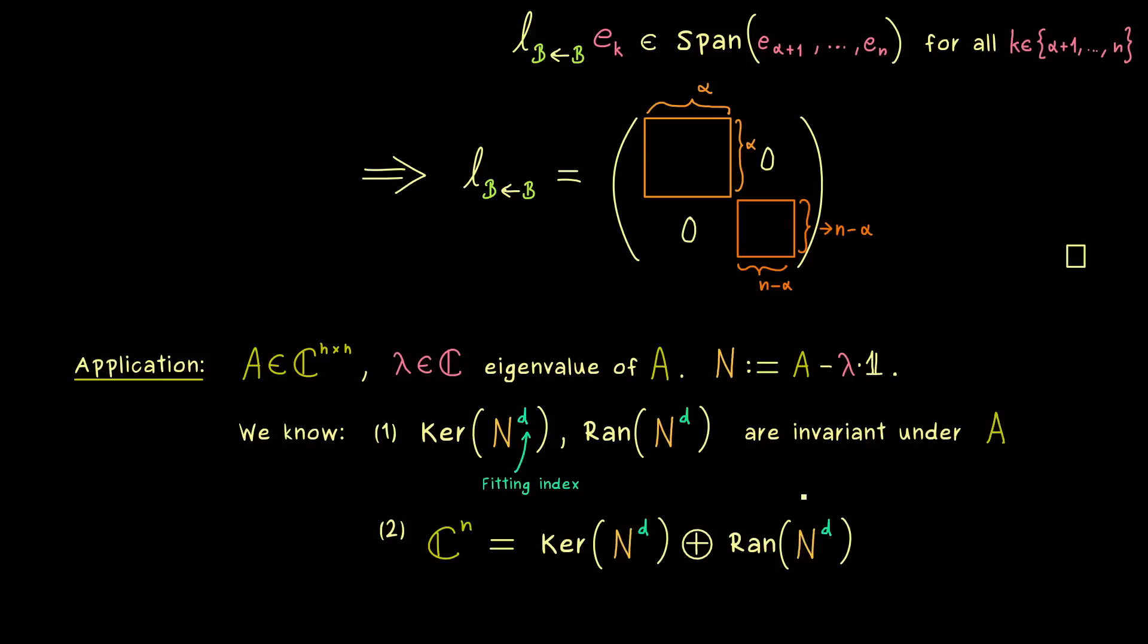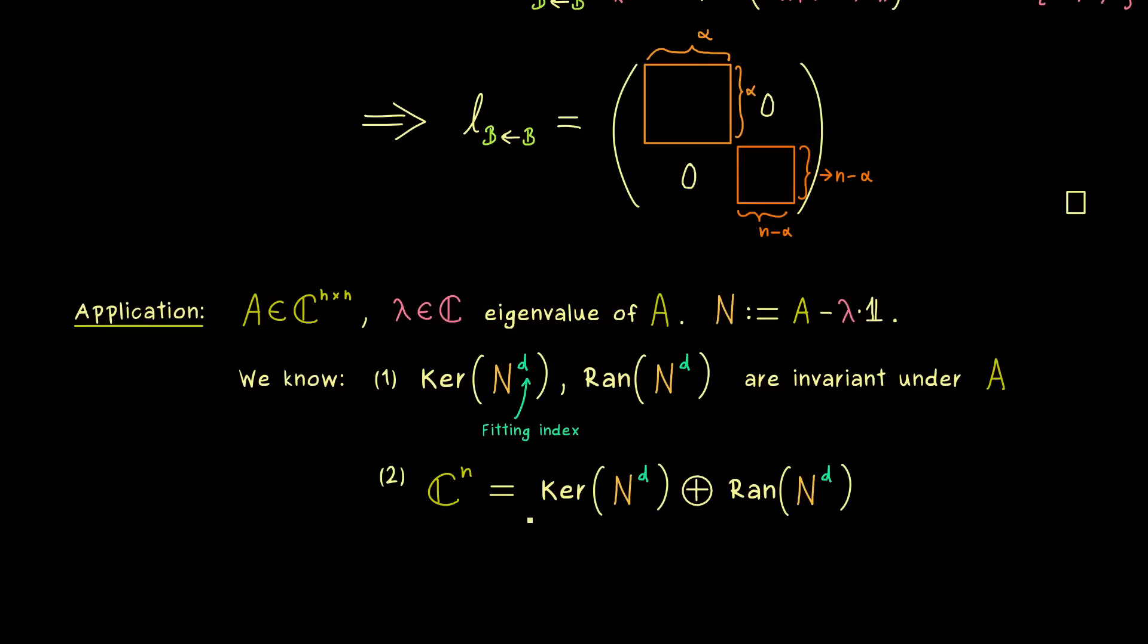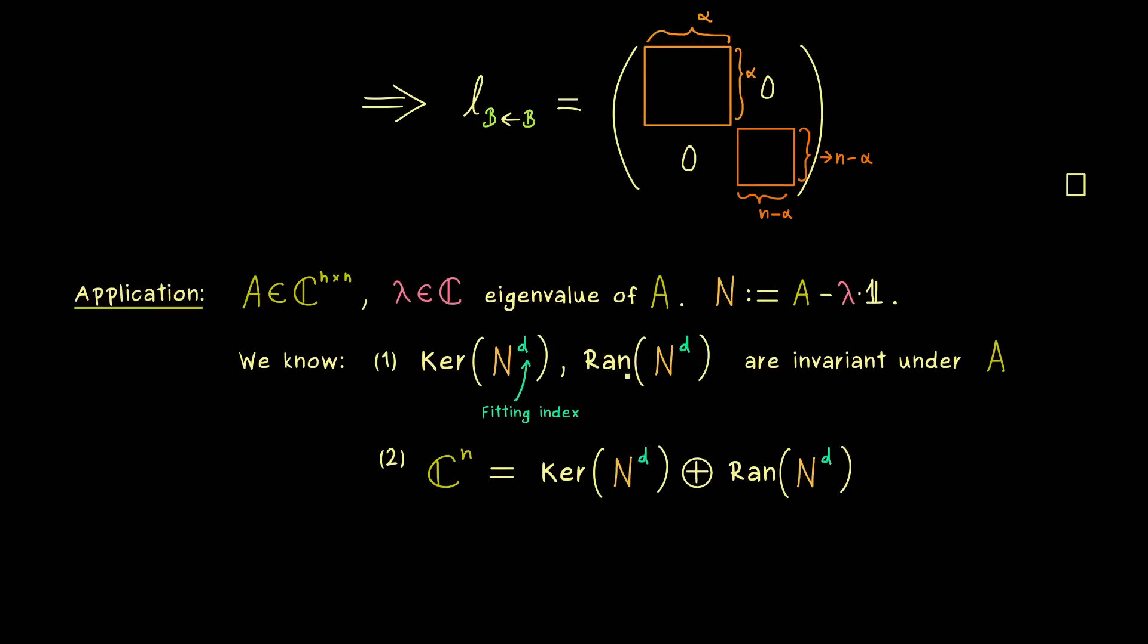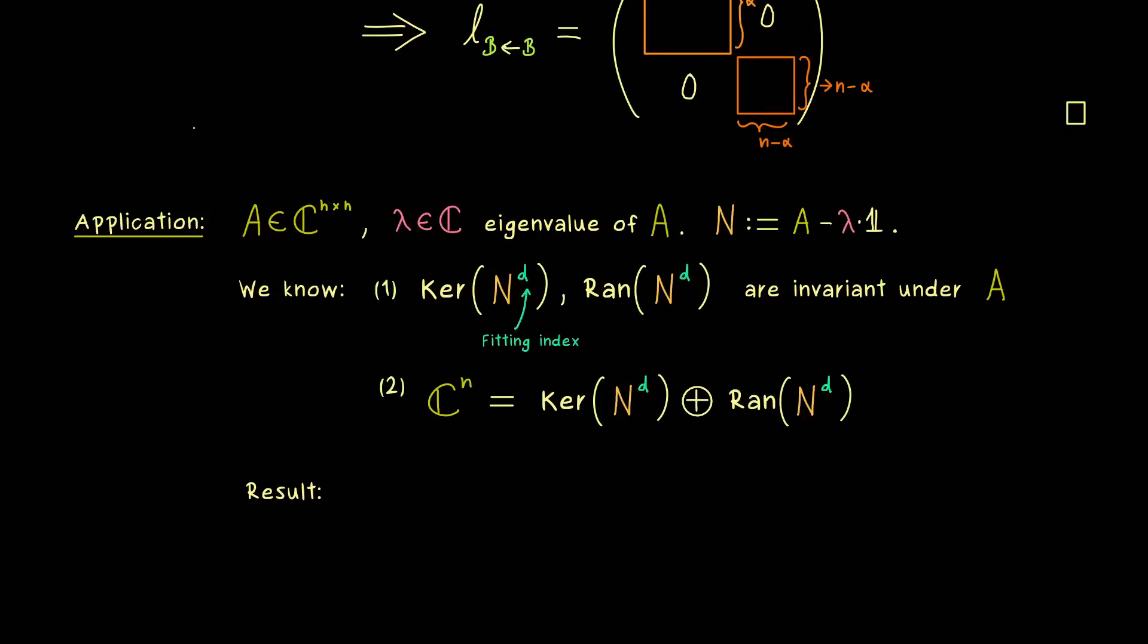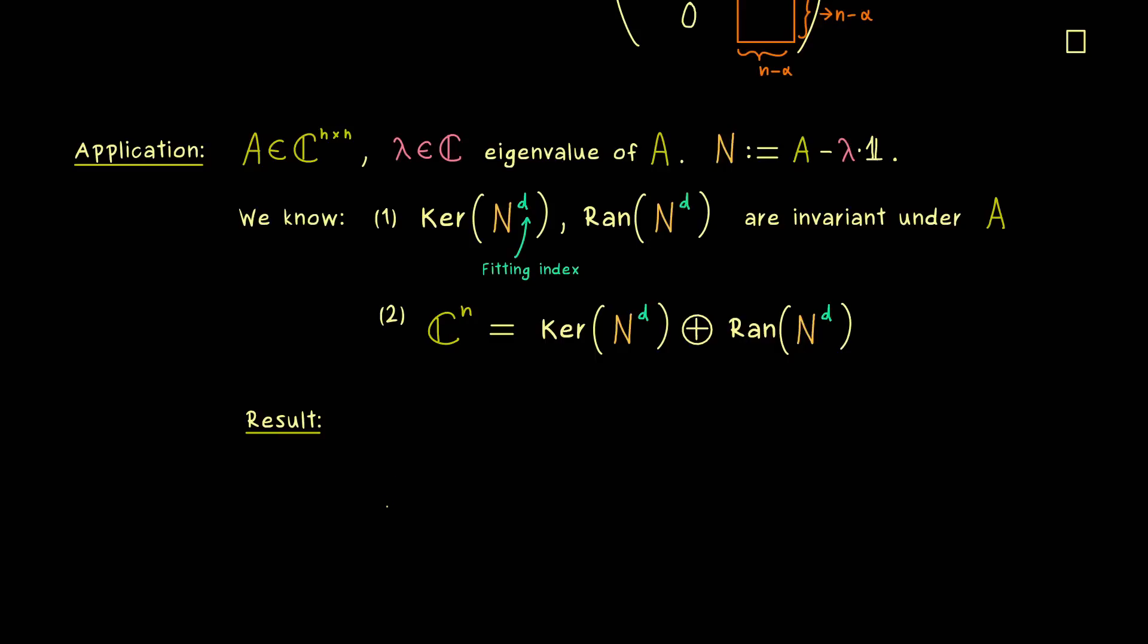We definitely have our invariant subspaces. The last video also showed that we have the direct sum of both subspaces, and the result is the whole space we consider. Our nice proposition from above is applicable and we get the following result: the matrix A is similar to such a block diagonal matrix. We cannot transform A into a diagonal matrix, but we can transform it into a 2×2 block diagonal matrix. We also know the sizes of the blocks, and the characteristic polynomials of A and this 2×2 block diagonal matrix are the same.